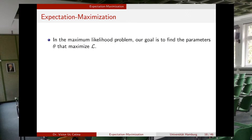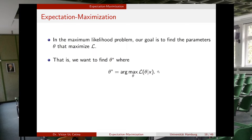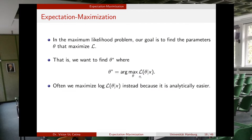In the maximum likelihood problem, our goal is to find the parameters theta that maximize the likelihood function. We want to find the optimal vector theta — theta star — that maximizes our likelihood function. Usually, instead of maximizing the likelihood directly, which is a product over every point in the dataset, we maximize the logarithm of the likelihood. Applying logarithms simplifies optimization: we compute derivatives of sums of many terms instead of derivatives of many products.